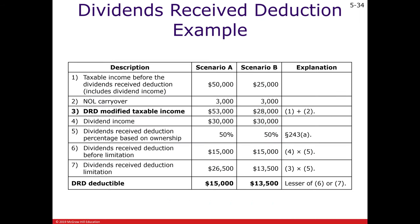Here we have taxable income before the dividend received deduction, but we're told there's an NOL carryover already subtracted out. Since modified taxable income requires that we cannot deduct the NOL, we back it out by increasing taxable income. In both cases the dividend received is 30%, and we're assuming it qualifies for the 50% rate. So half of that dividend is the tentative dividend received deduction. We also have to take 50% of the modified taxable income, and of these two amounts the lower is the 50% of the dividend.